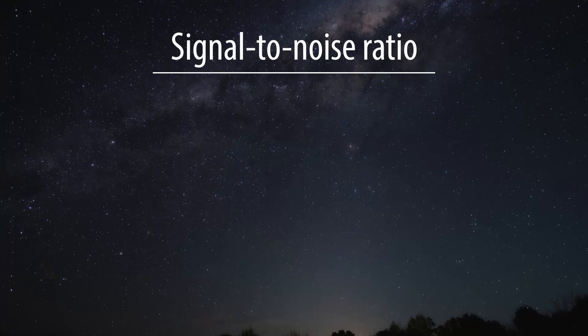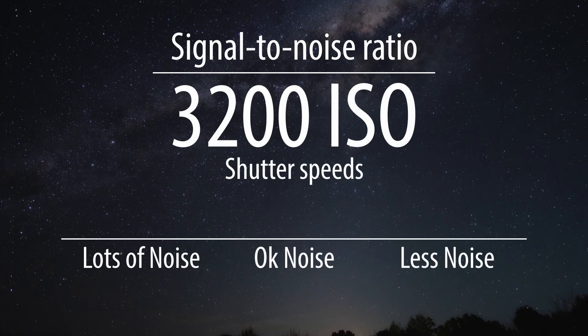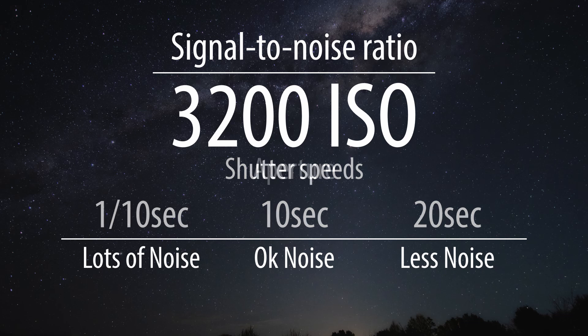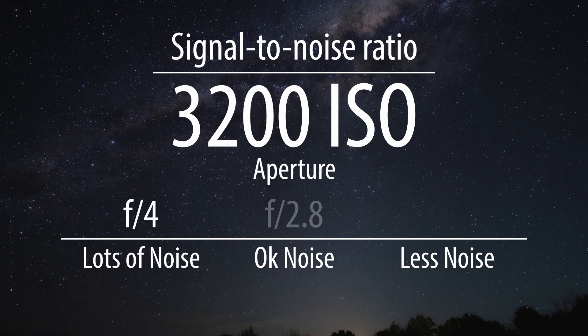Now ISO isn't quite as simple as you'd think. To get a better understanding, I'd recommend doing a little bit of research on signal-to-noise ratio. To really simplify it: 3200 ISO is much noisier at one-tenth of a second versus 10 seconds versus 20 seconds. The same goes for aperture — 3200 ISO has more noise at f4 versus f2.8 versus f1.4. So when shooting sport or wildlife photography, those faster shutter speeds will have far more effect on your noise than in astrophotography with those longer shutter speeds.